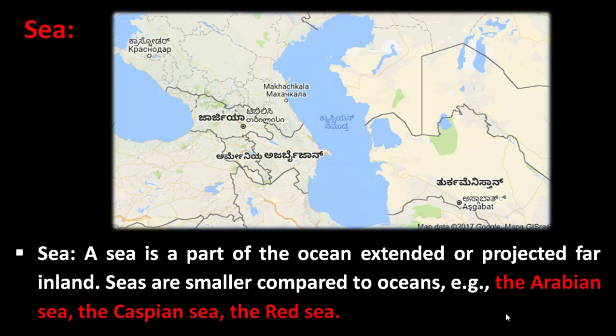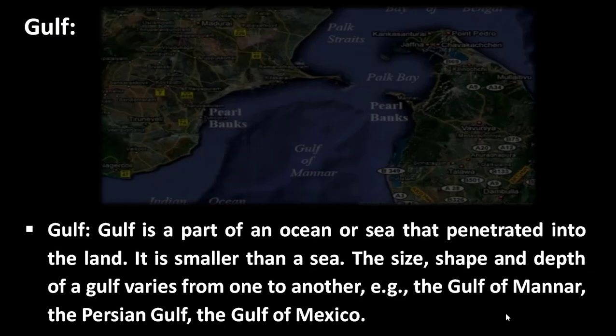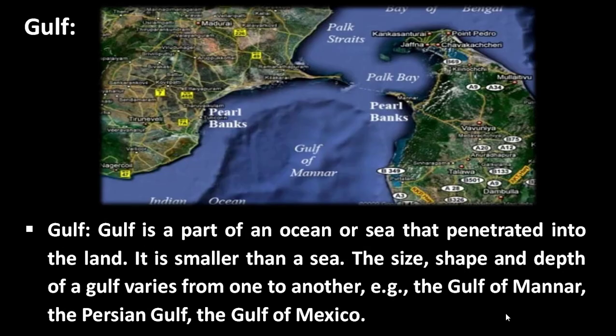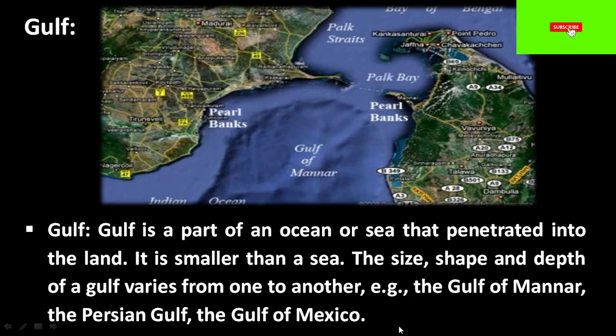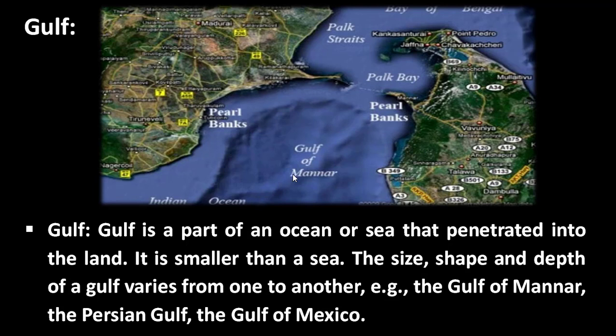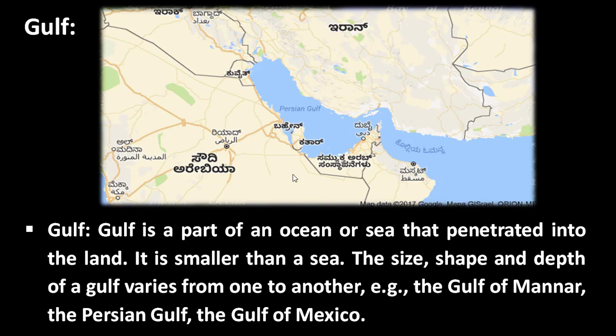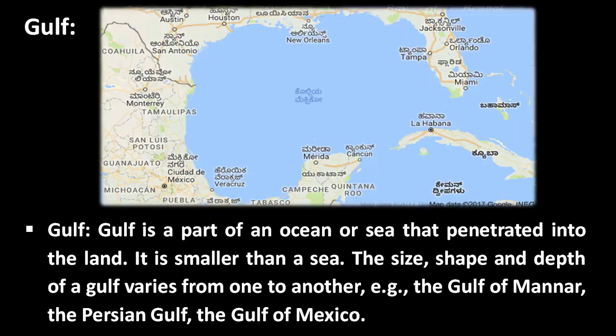The next concept is the gulf. A gulf is a part of an ocean or sea that penetrates into the land. It is smaller when compared to a sea. The size, shape, and depth of a gulf varies from one to another. Examples include the Gulf of Mannar, the Persian Gulf, and the Gulf of Mexico.